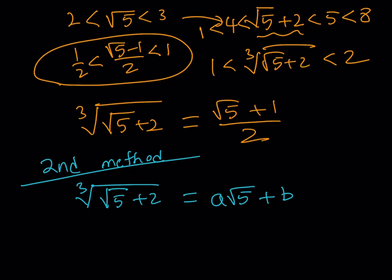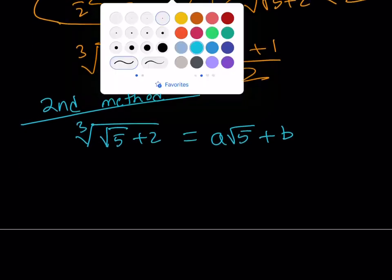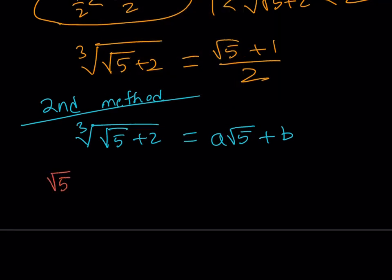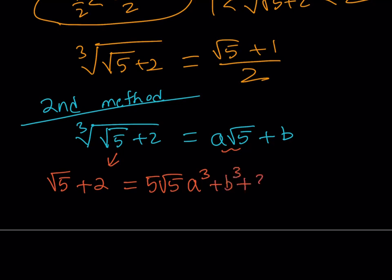The next step is cubing both sides. From the left side we get square root of 5 plus 2. For the right side, cubing A root 5 plus B using our formula gives 5 root 5 A cubed plus B cubed plus 3AB times root 5, and then multiplying through by the original expression A root 5 plus B.